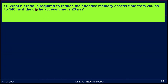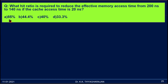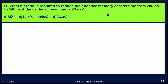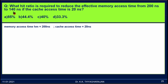Now let us see another problem. What hit ratio is required to reduce the effective memory access time from 200 nanoseconds to 140 nanoseconds, if the cache access time is 20 nanoseconds? The options are: A) 85%, B) 44.4%, C) 40%, D) 33.3%. In this problem, the memory access time is 200 nanoseconds, the cache access time is 20 nanoseconds, and 140 nanoseconds is the average access time.